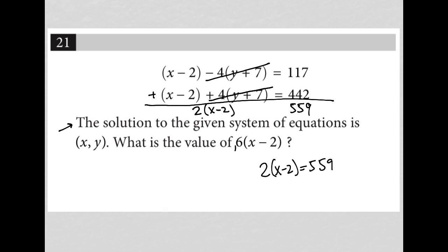I want the value of 6 times x minus 2. Well, if I multiplied the entire thing here then by 3, then the 3 would distribute across the bracket, and I'd have 6 times x minus 2 is equal to 559 times 3, which I can just put in my calculator. So 559 times 3 is 1,677. So there's my answer, 1,677.